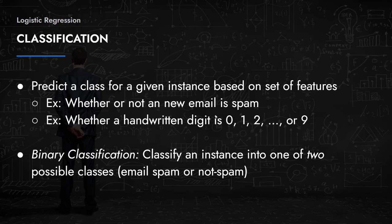So let's define classification. Classification is where you predict a class from a given instance based on a set of features. An example would be predicting whether an email is spam or not — it's either spam or it's not. There's no continuous variable; it's just a binary 0 or 1, true or false, spam or not spam. That's a classical example of a classification problem.